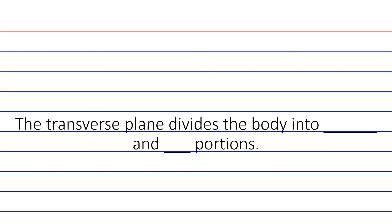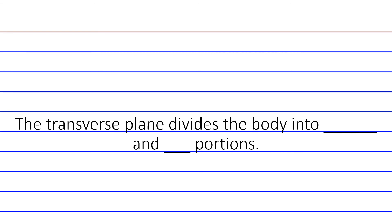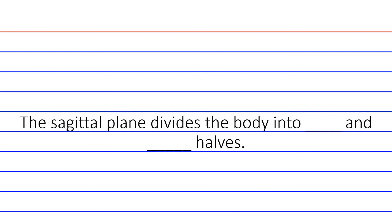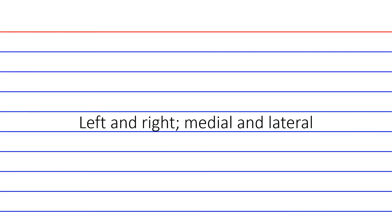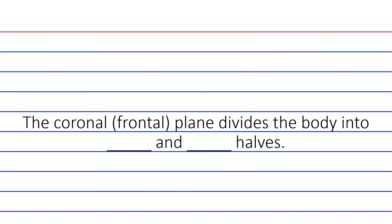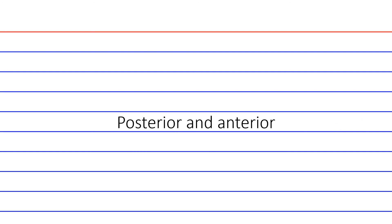Here are some planar questions. The transverse plane divides the body into blank and blank portions — the answer is superior and inferior. The sagittal plane divides the body into blank and blank halves — the answer is left and right. Depending on where that sagittal plane cuts, whether parasagittal or mid-sagittal, it can divide the body into medial and lateral portions. The coronal or frontal plane divides the body into blank and blank halves — the answer is posterior and anterior.